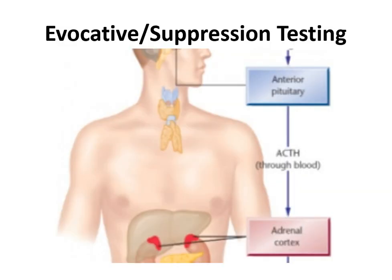On page 548, we have evocative suppression testing codes 80400 through 80439. These codes measure the effect of an evocative or suppressive agent on a chemical constituent. For example, code 80400, the ACTH stimulation panel, is used to determine whether ACTH is being produced in the patient's body — relevant in situations like adrenal gland insufficiency. Note that these are also panel codes, so the provider must want everything included in the panel for that code to be reported.